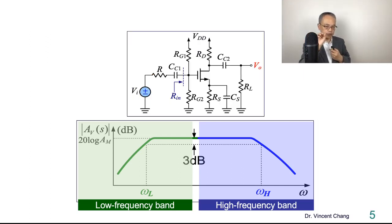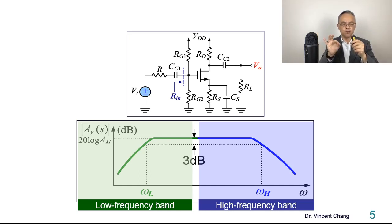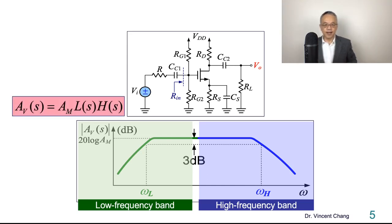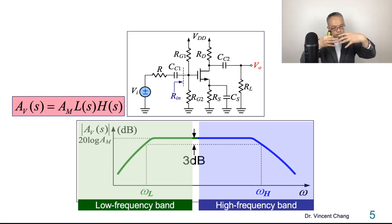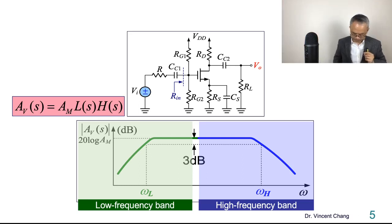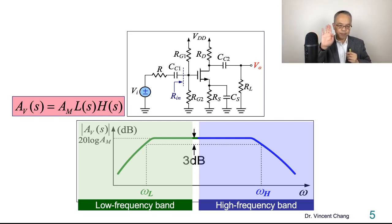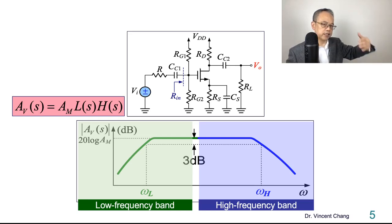In this lecture video, because we are talking about high frequency analysis and high frequency response, we are only going to focus on the internal capacitance effect. When you analyze the high frequency behavior combined with the low frequency band, you get a general form of the transfer function AV as a function of the complex frequency s, which is the mid-band gain times a low frequency function times a high frequency function.